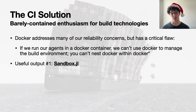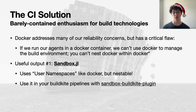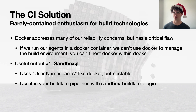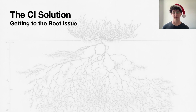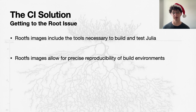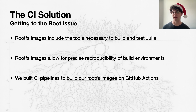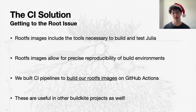So useful output number one from this whole work is Sandbox.jl, which is a user namespaces-based Linux toolkit for containerization. You can use it in your BuildKite pipelines with the Sandbox BuildKite plugin. Sandbox uses a root file system to provide the compilers, toolchains, and all the tools necessary to build and test Julia. Rootfs images allow for precise reproducibility of the build environment, and we built CI pipelines to build the rootfs images themselves because we love CI.